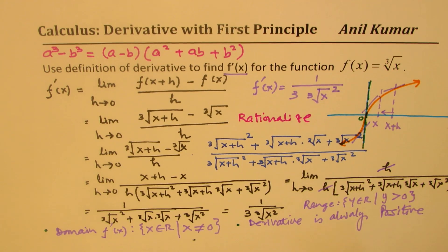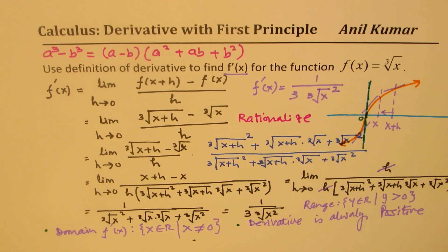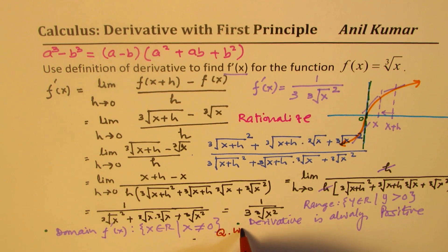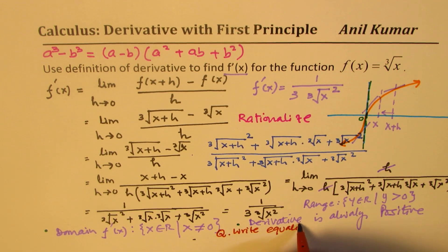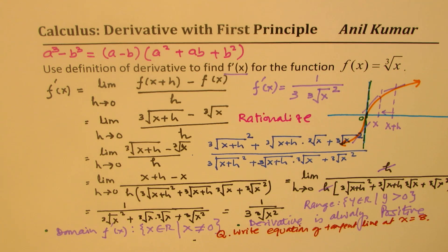Now, there could be many questions based on this. You could actually find the equation of a tangent line at any given point. So as a practice question for you: write the equation of the tangent line at x equals 8. Cube root of 8 is 2, so that will give you a nice equation to work with. I hope with this you understand the cube root function fairly well — it's a very important function from a test point of view. Feel free to write your comment, share your views, and if you like and subscribe to my videos, that'd be great. Thanks for watching and all the best.